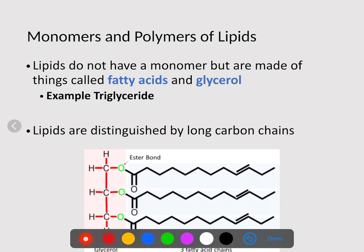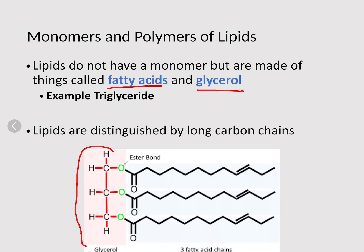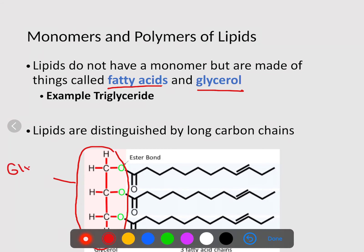Lipids do not really have a monomer form, but they are made of two individual parts: fatty acids and glycerols. If I look down here, here is my glycerol molecule, and that glycerol molecule is bonded to three fatty acid tails. This is called a triglyceride. Lipids are distinguished by these long chain carbon chains. Notice these long chains, those are distinguishing of lipids, and that's what makes them not able to dissolve in water.